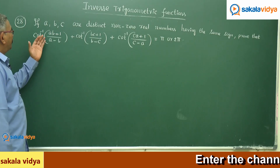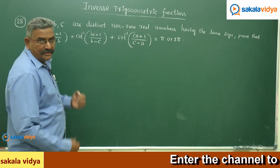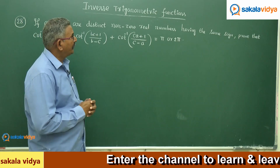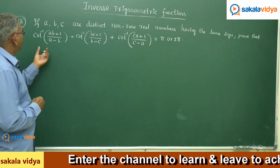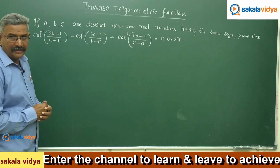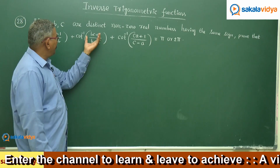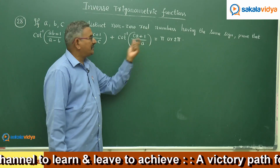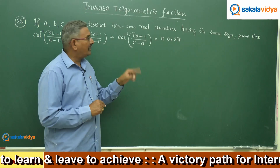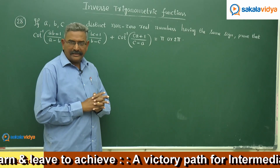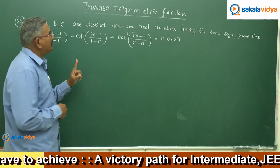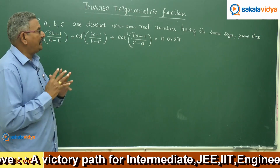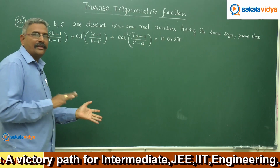Next problem: if a, b, c are distinct non-zero real numbers having the same sign, prove that cot⁻¹((ab+1)/(a-b)) + cot⁻¹((bc+1)/(b-c)) + cot⁻¹((ca+1)/(c-a)) equals either π or 2π. Since a, b, c have the same sign, we can arrange them in ascending or descending order, giving two conditions.